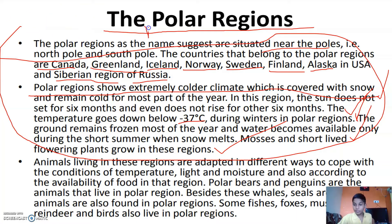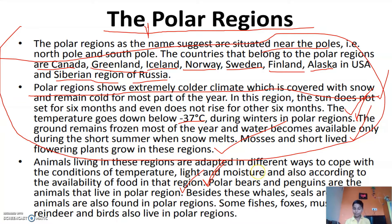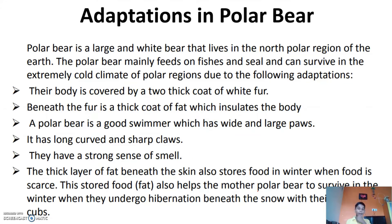Animals in these regions are adapted in different ways to cope with the conditions of temperature, light and moisture, and according to the availability of food. Polar bears and penguins are the animals that live in polar regions. Besides these, there are also whales, seals, foxes, musk ox, reindeer, and birds that also live in polar regions.